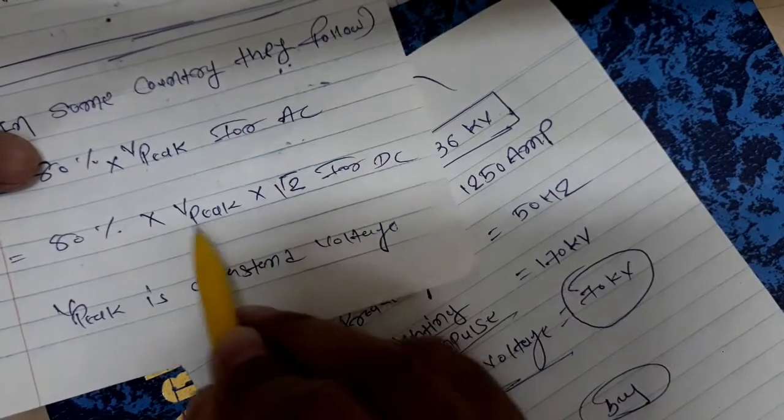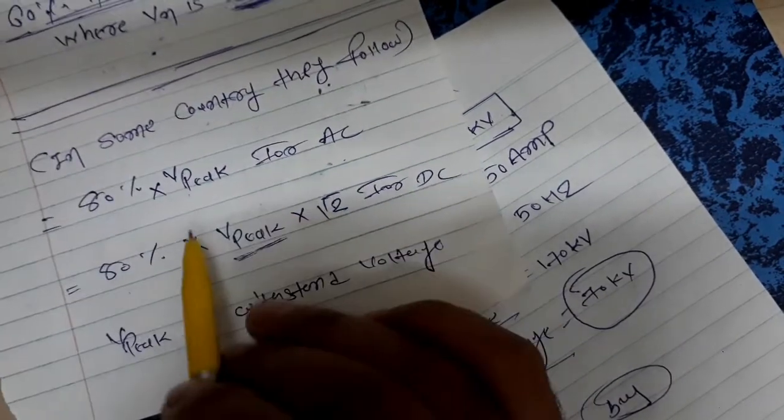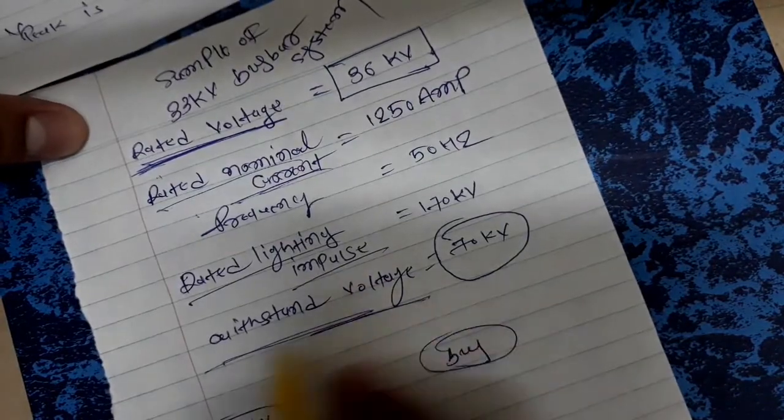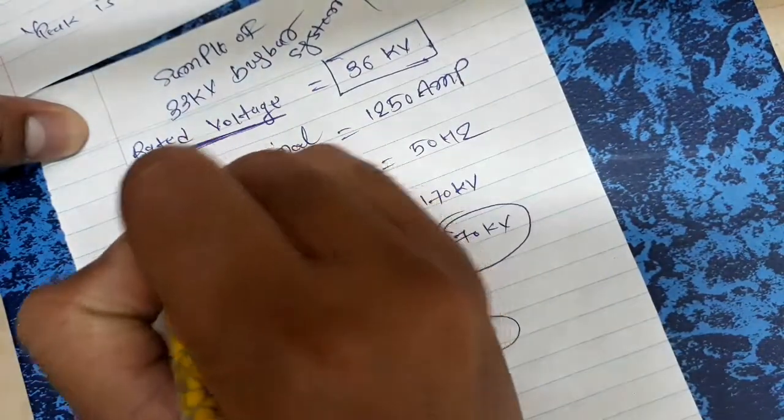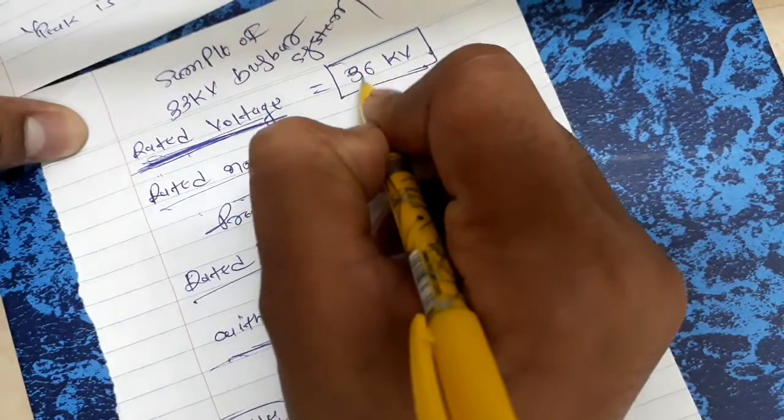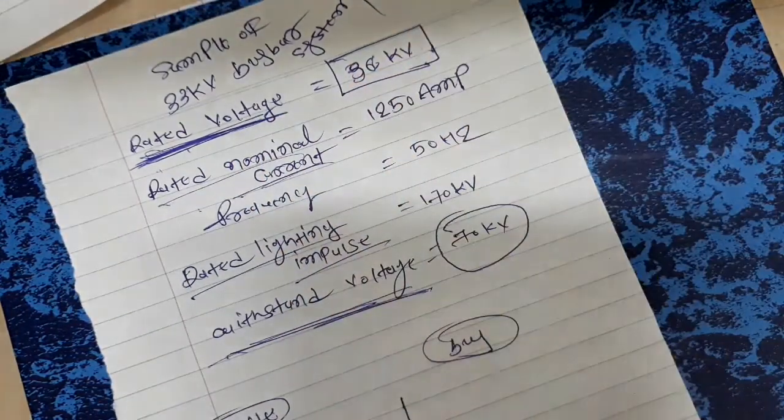Using the second formula with 80% × Vpeak, if withstand voltage is 70kV and rated voltage is 36kV, we can calculate the test voltage. These are our five questions.